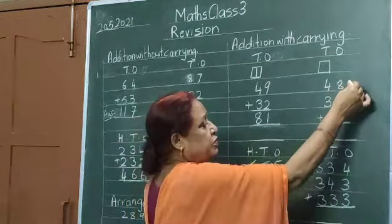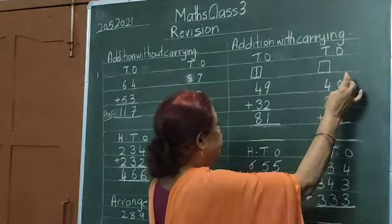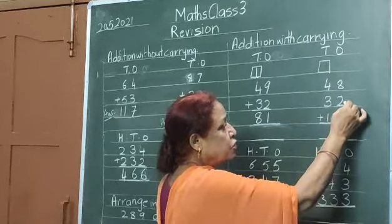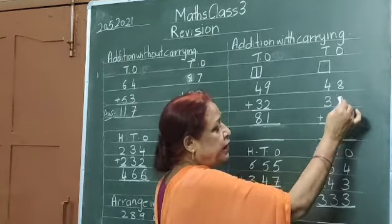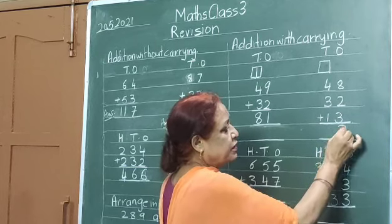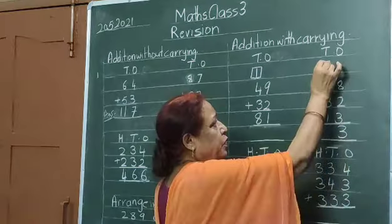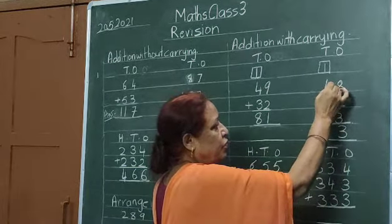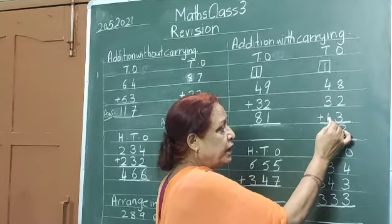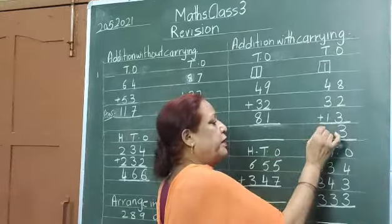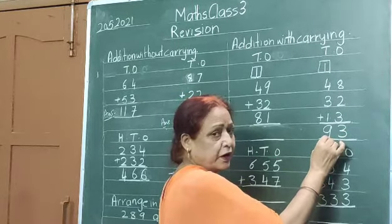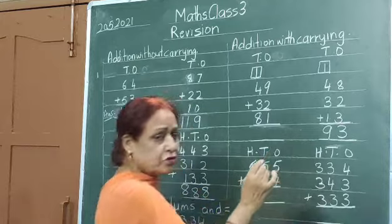Here also in 3 steps. 8 plus 2 is 10, 10 plus 3 is 13. Carry 1. 4 plus 3 is 7, and 1 is 8, and 1 is 9. Is it alright? Have you understood children?